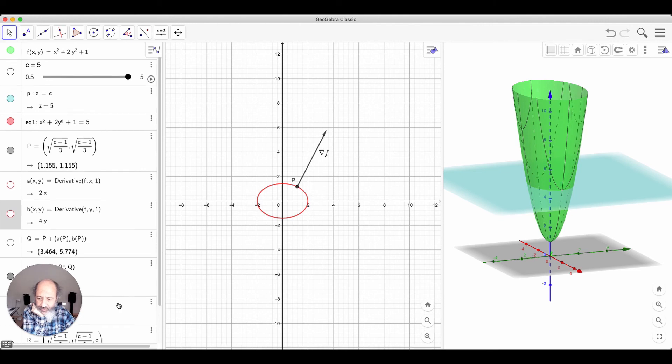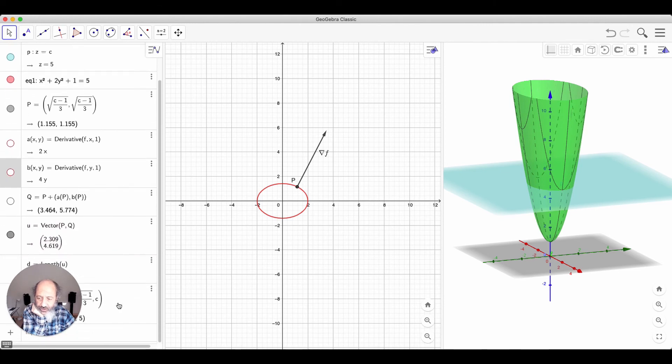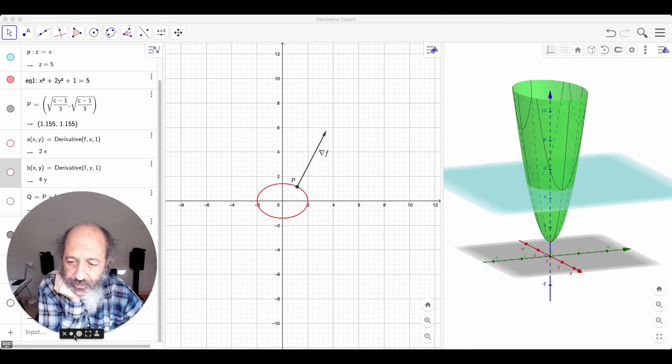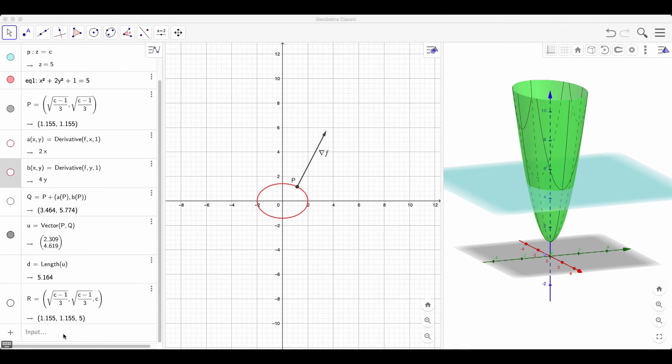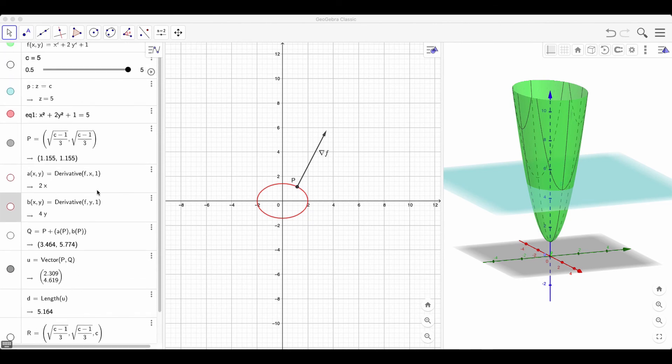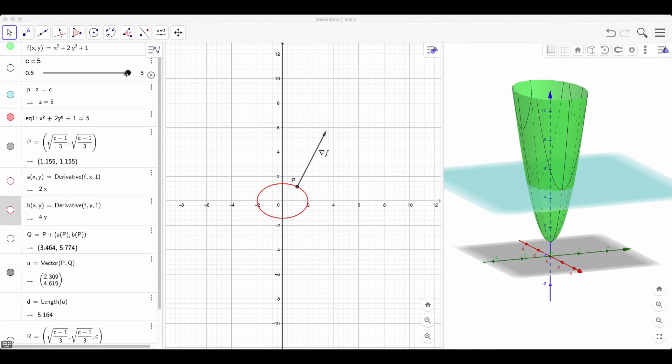So the gradient is telling us not only, you cannot see here because of, let me remove this thing. Here you have the length of the gradient. So let's go and check from the beginning.